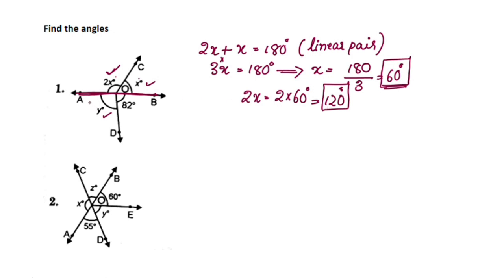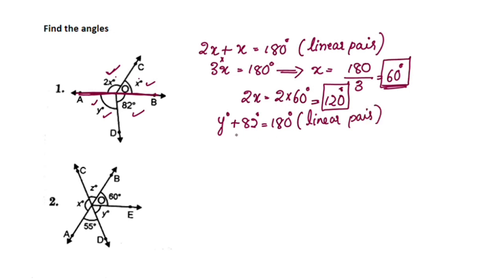Now angle y — we have 82 degrees given. Y is a linear pair. So y plus 82 degrees is equal to 180 degrees. Therefore y is equal to 180 minus 82, which is 98 degrees. Y is equal to 98 degrees.